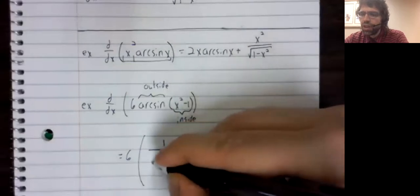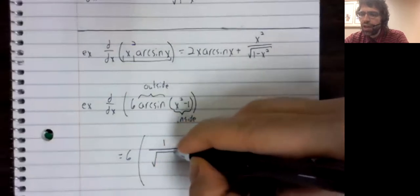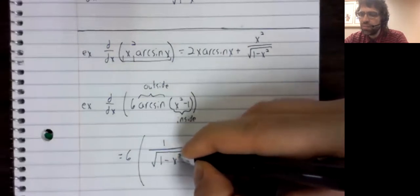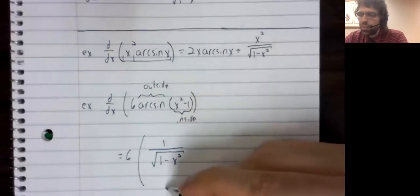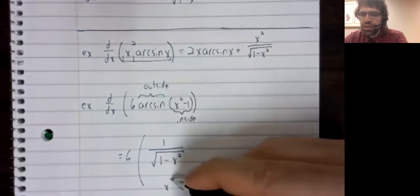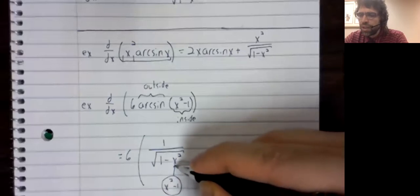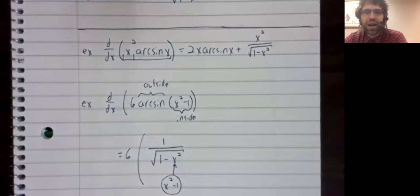The derivative of the outside function is this. But we take our inside function. The derivative of the outside function and stick it inside.